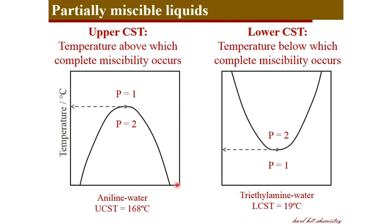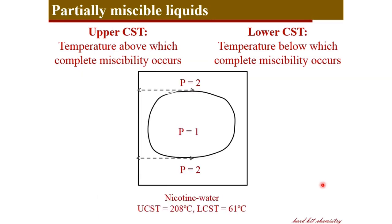The second type is the system with a lower critical solution temperature. For example, triethylamine and water form two separate phases at room temperature. But if you cool it down to around 19°C, the two liquids become miscible at any composition — irrespective of composition, at and below 19°C, triethylamine and water are completely miscible, forming only one phase. A third type involves nicotine and water: above 61°C and below 208°C, the liquids are completely miscible. But below 61°C and above 208°C, they are immiscible, forming two separate phases.